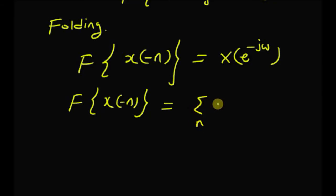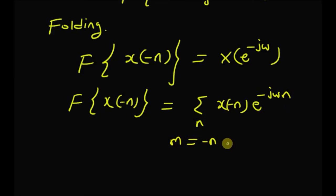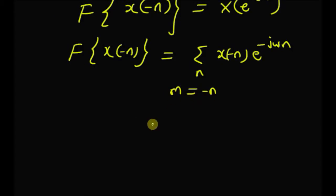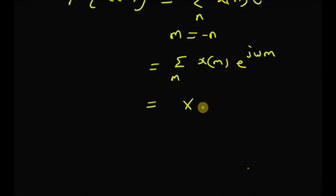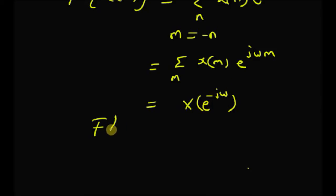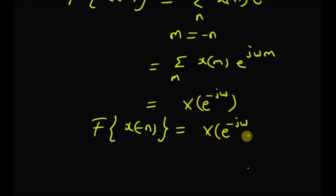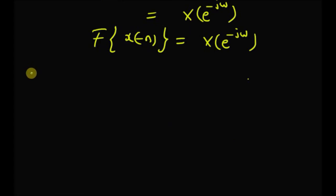By definition, this is equal to the sum of x(−n) e^{−jωn}. Now by substituting a new variable m = −n, we get the summation over m of x(m) e^{jωm}, which is by definition the DTFT with ω replaced by −ω, giving X(e^{−jω}). Therefore, the DTFT of the folded signal x(−n) equals the original DTFT with ω replaced by −ω. The next property is related to symmetry.